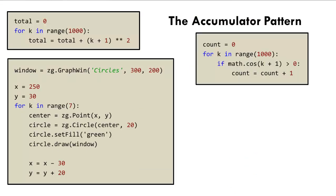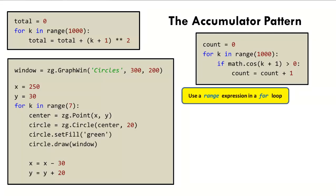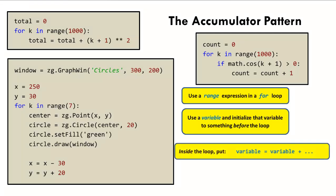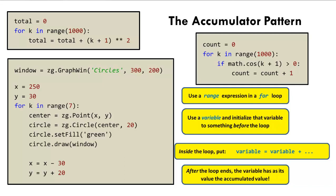In summary, let's note one last time the three key features of the accumulator pattern, whether it be for summing, or counting, or graphical accumulation. First, we use a range expression in a for statement to make a loop run the number of times that the problem requires. Second, we use a variable, and we initialize that variable appropriately before the loop. Third, inside the loop, we write a statement of the form: variable gets variable plus something. Lousy mathematics, but if you read this as variable gets what it was plus something, it makes perfect sense. Then, after the loop ends, the variable will have as its value the accumulated value.